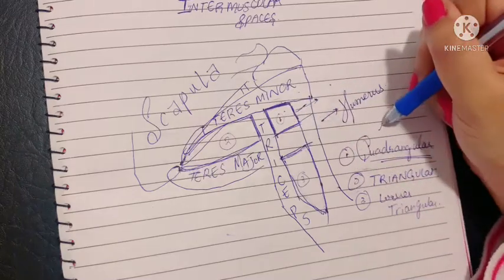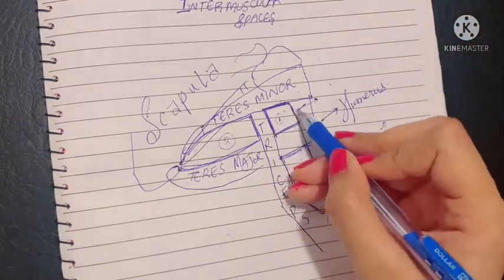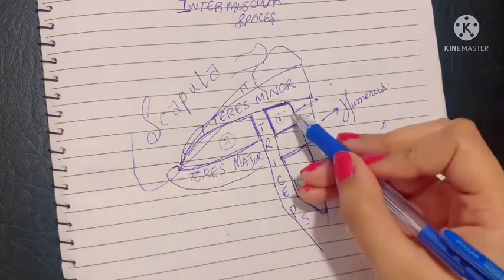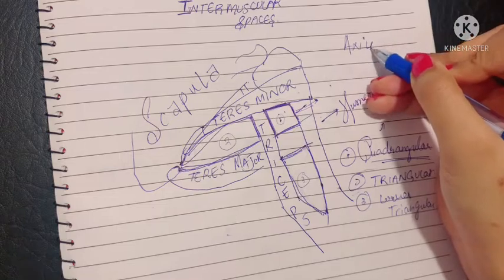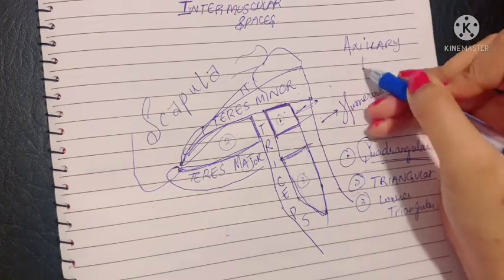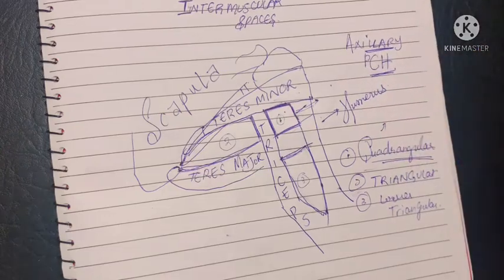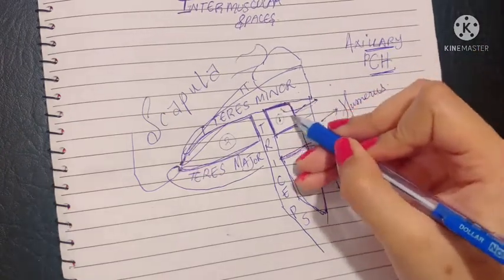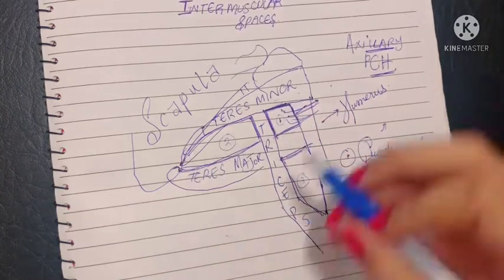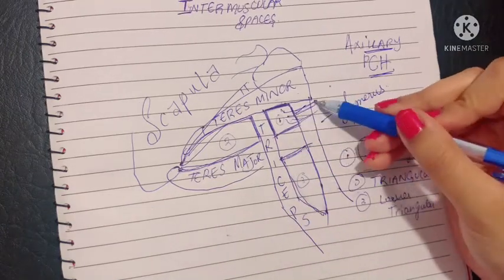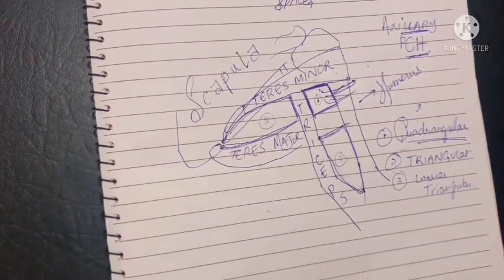Now let's talk about the contents. The quadrangular space contains two important structures near the surgical neck of the humerus: first, the axillary nerve, and second, the posterior circumflex humeral artery — which we studied in the third part of the axillary artery. These two structures pass posterior to the surgical neck of the humerus to take part in the anastomosis around the neck of the humerus.